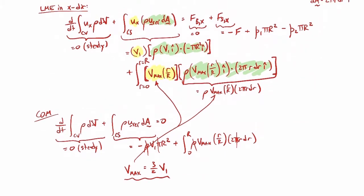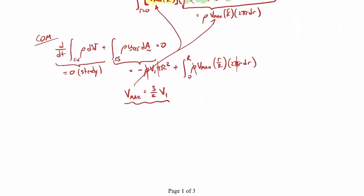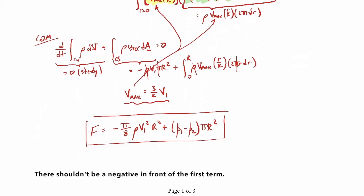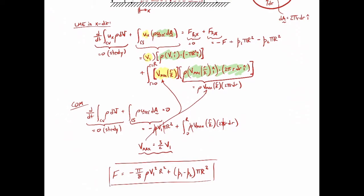The integrals are straightforward calculus. After substituting v_max = (3/2)v1 and simplifying everything, the force that the mesh exerts on the fluid comes out to: F = minus (π/8) ρ v1² R² plus (p1 minus p2) times π R squared.